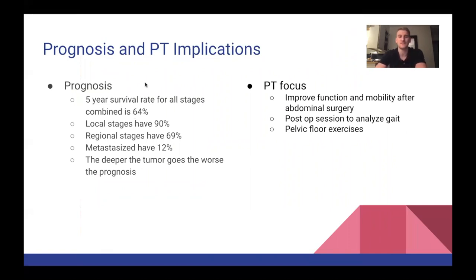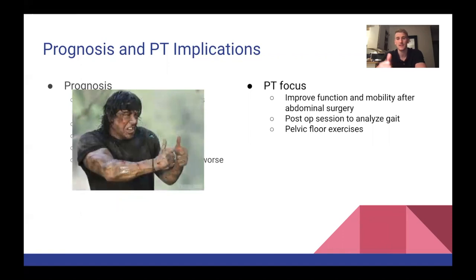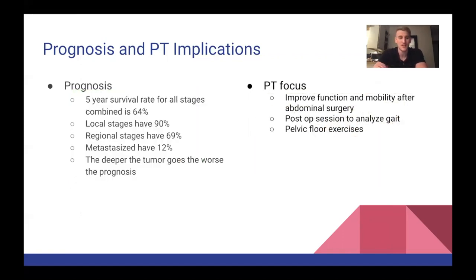Prognosis: the five-year survival rate for all stages combined is 64%. If caught in the local stages and treatment begins, there is a 90% survival rate. If caught in the regional stages, there is still a 69% five-year survival rate. However, if not caught until metastasis, survival drops to about 12% at five years. The deeper the tumor grows into the colon wall, the worse the prognosis.